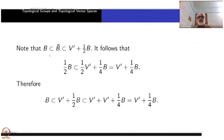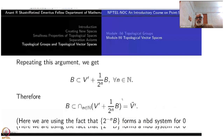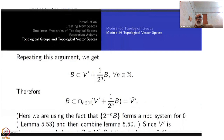We can repeat this process: B ⊆ V' + (1/2)B ⊆ V' + (1/4)B ⊆ V' + (1/8)B, and so on. This gives B ⊆ V' + (1/2^n)B for every n. This is a decreasing sequence, and B is contained in the intersection of all these sets. But these sets form a neighborhood system for zero, as proved previously. Therefore, this intersection is nothing but the closure of V'.